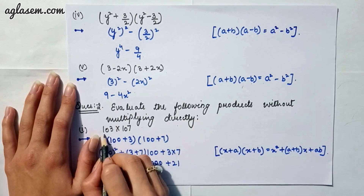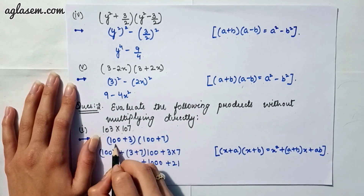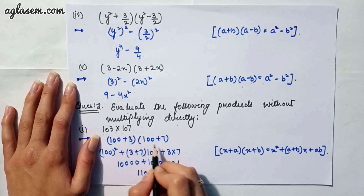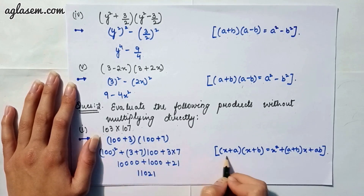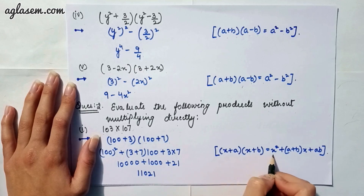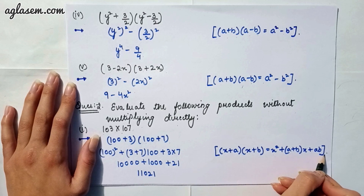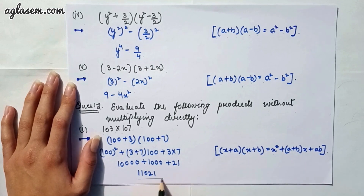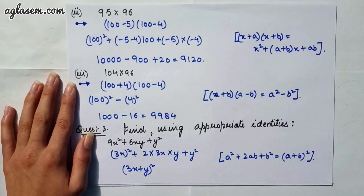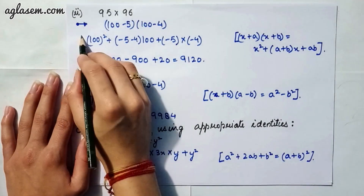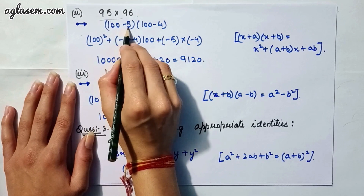The first part says 103 × 107. We write 103 as (100 + 3) and 107 as (100 + 7). Applying the identity (x + a)(x + b) = x² + (a + b)x + ab, we get the answer as 11,021.